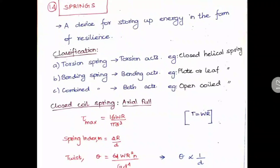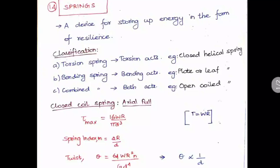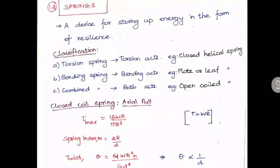Here we will be studying the values for the closed coil spring under axial load. The first value is the maximum shear stress, which is τ_max = 16WR / πD³. This is similar to the torsion formula τ_max = 16T / πD³, where the torque T is given as W×R due to the axial load applied.